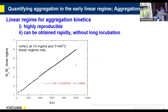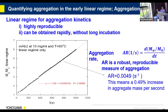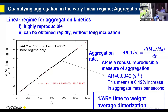What we do is look at the early linear regime of aggregation over time — here shown with a monoclonal antibody aggregating over about 15 minutes. We plot Mw over M0, the weight-average molecular weight divided by the initial mass of the native intact protein. Taking the slope gives us what we call the aggregation rate, with units of inverse seconds. It's robust, reproducible, and interpretable — for example, 0.005 per second means a 0.5% increase in weight-average mass per second. And the reciprocal of the aggregation rate is the time it takes for the sample to reach weight-average dimerization — a nice benchmark.